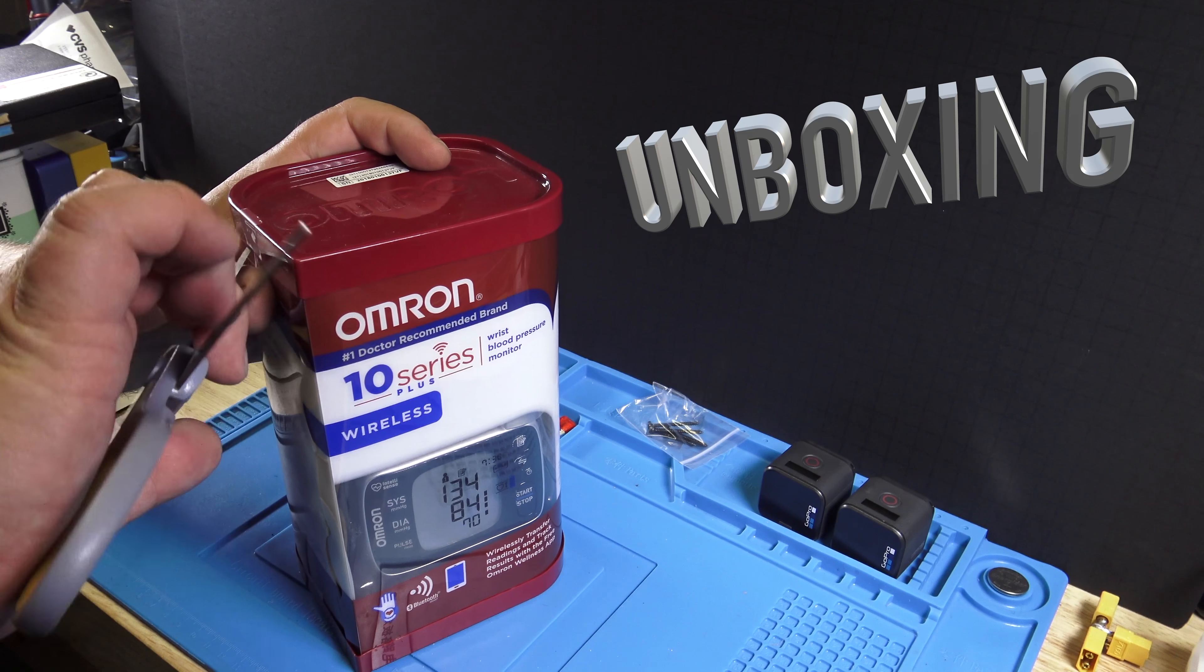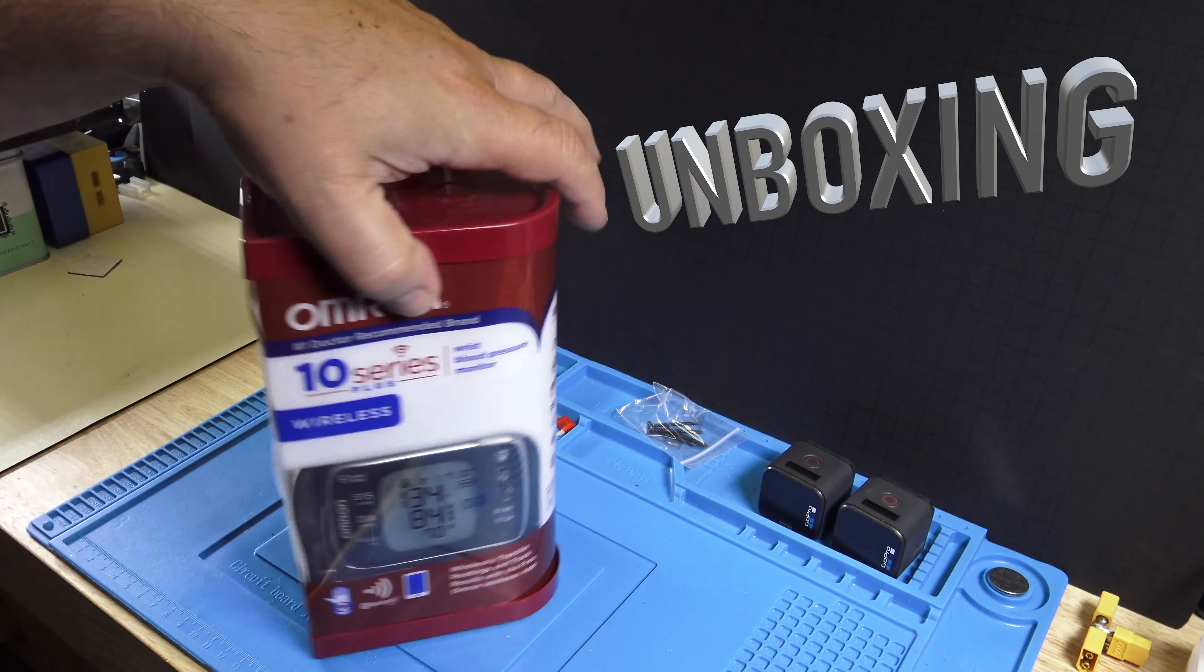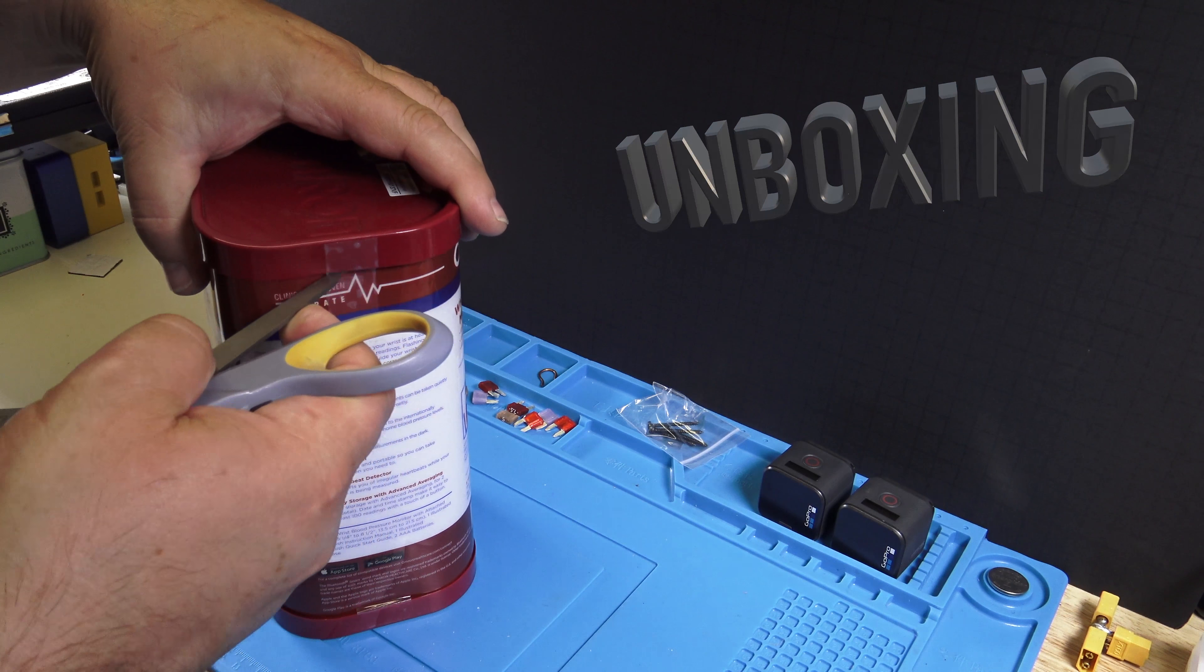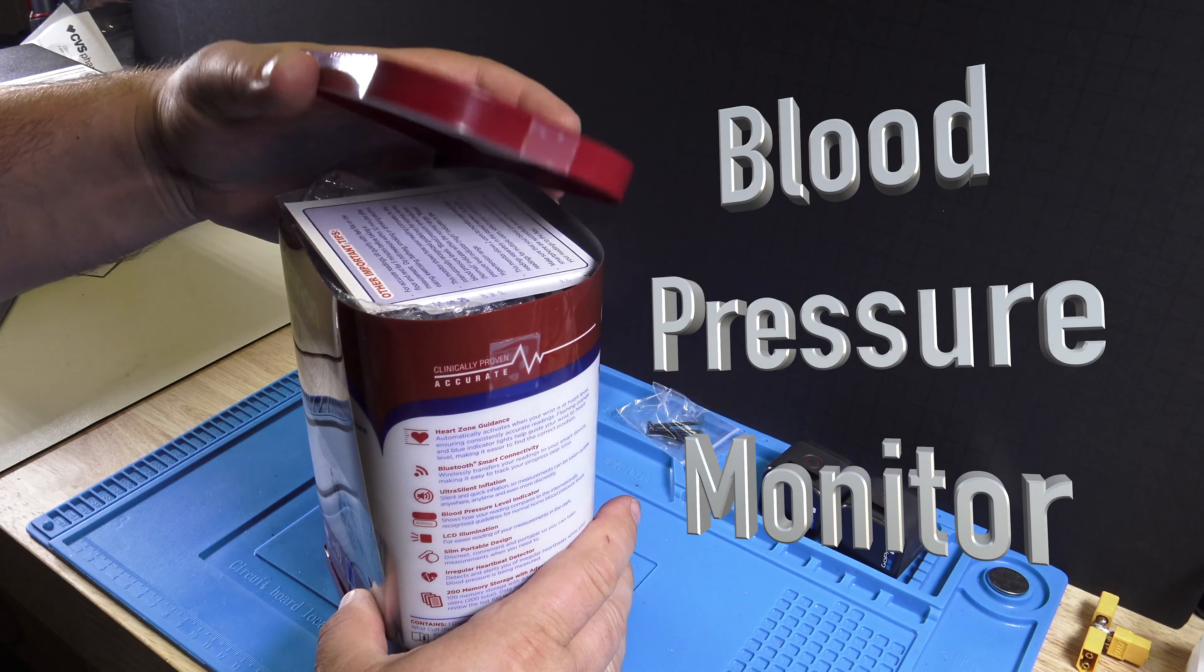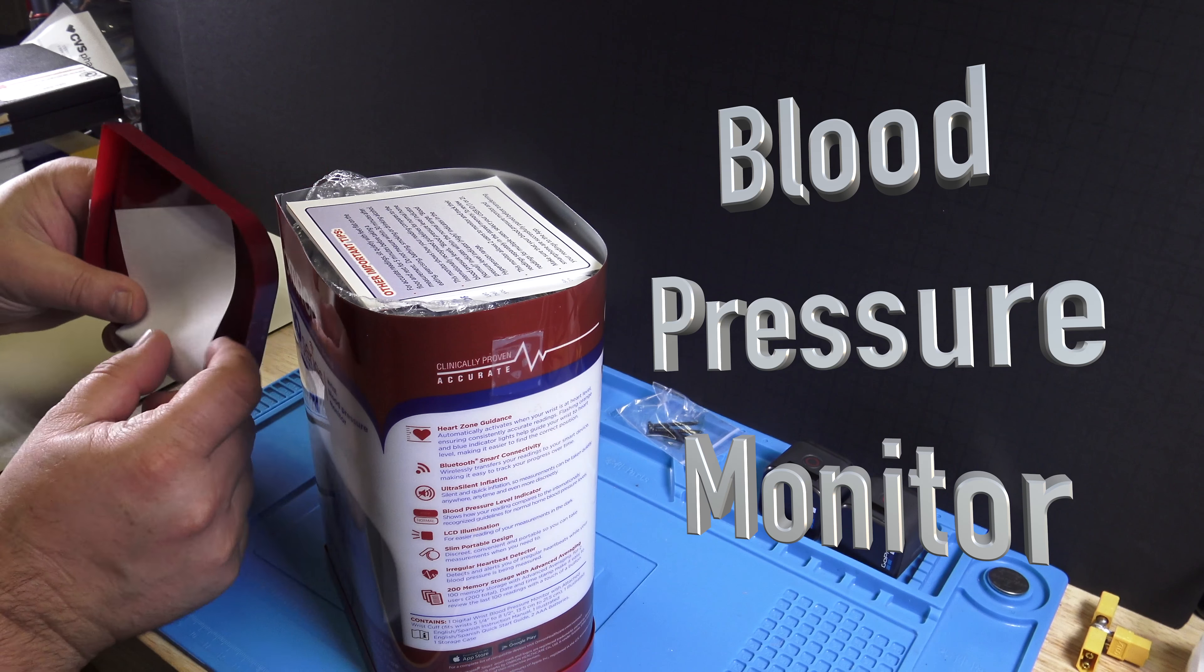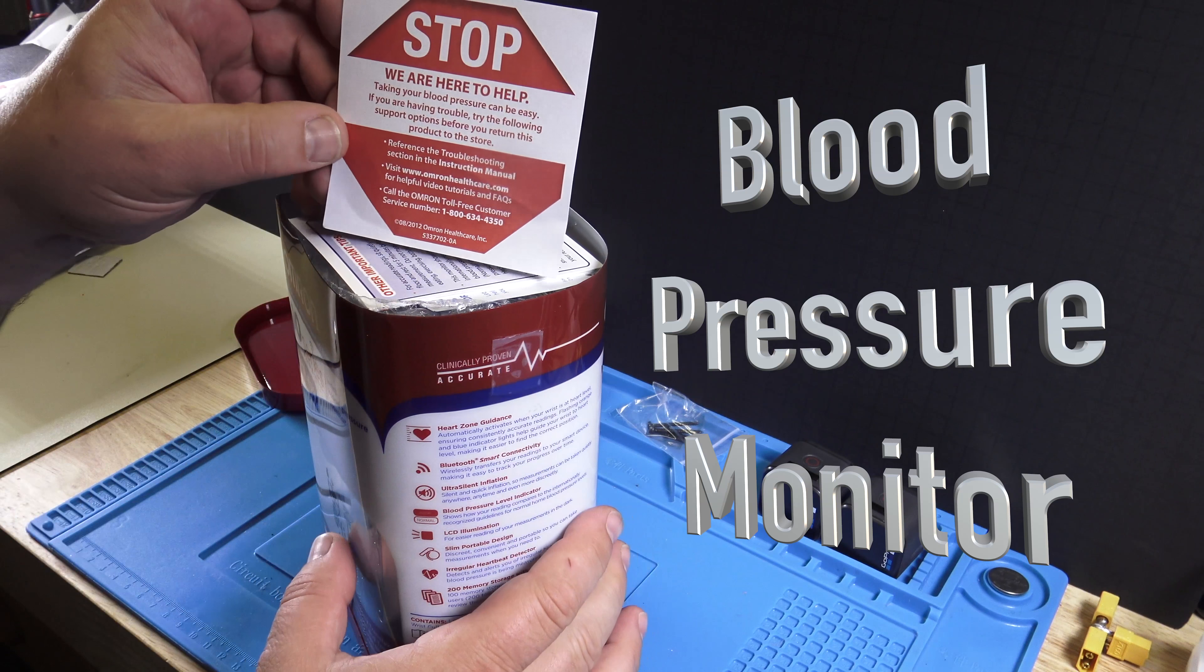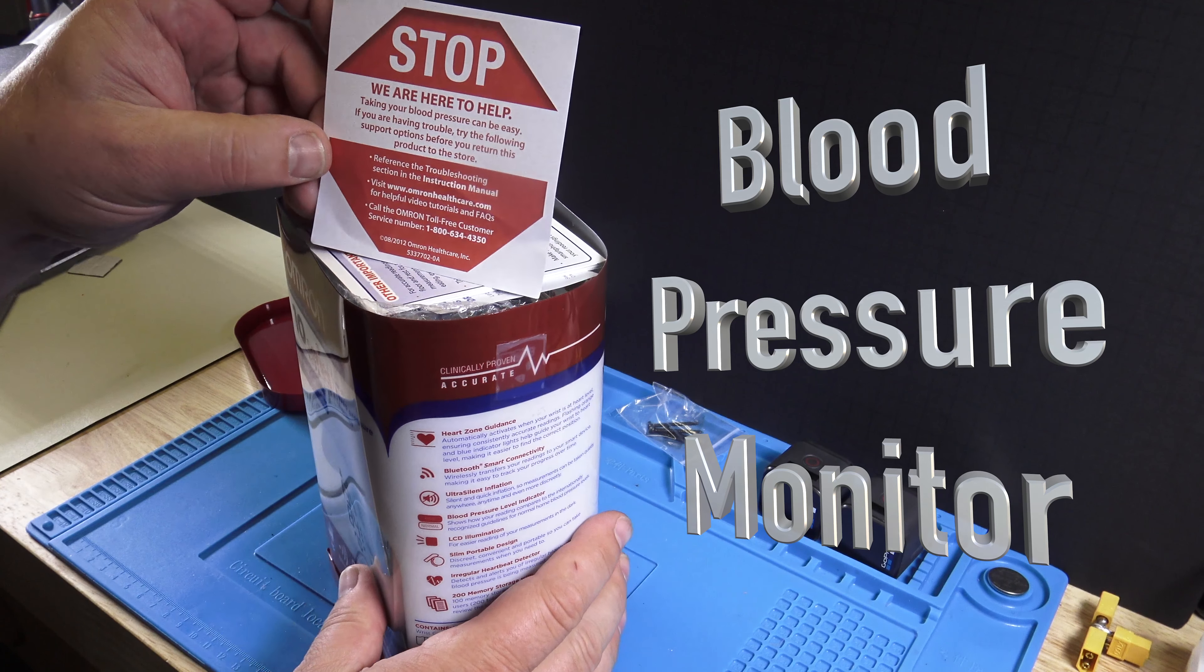So, we are unboxing an Omron blood pressure monitor. This is one of those that go around the wrist. I am taking the lid off, there is a little flyer in here.